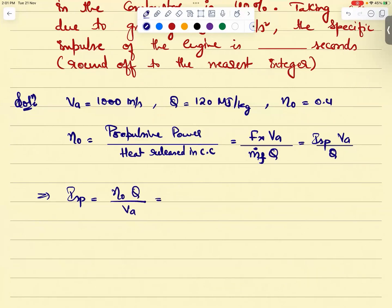Propulsive power is thrust into velocity divided by what is heat released - M dot F fuel will release the heat right, M dot F into its calorific value Q. What is F by M dot F? ISP into VA by Q. So with this I will be able to calculate ISP as eta_o into Q divided by VA, 0.4, 120 MJ 10^6 right, megajoule per kg, divided by what is VA value they have given, 1000.